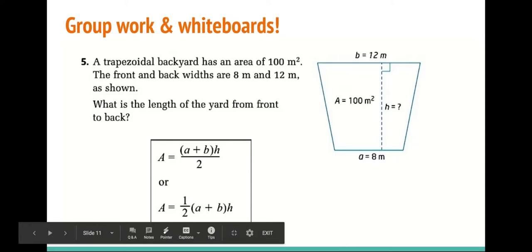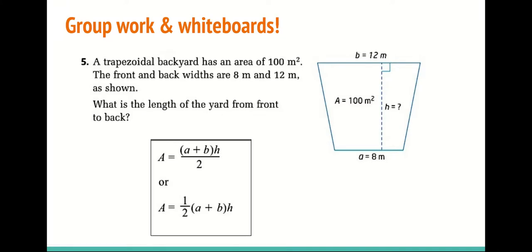Question 5 deals with the trapezoidal backyard, which has an area of 100 meters squared. The front and back widths are 8 meters and 12 meters as shown. What is the length of the yard from front to back?